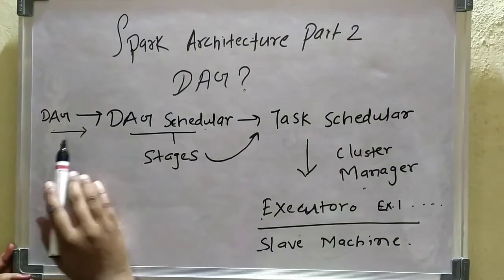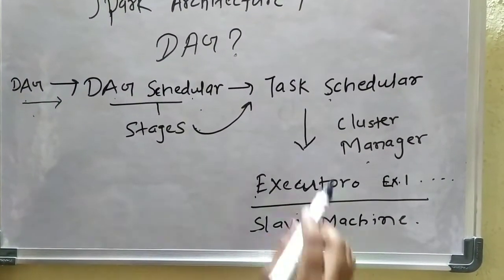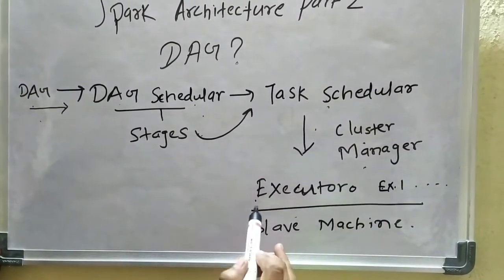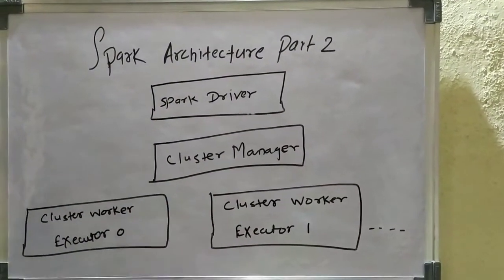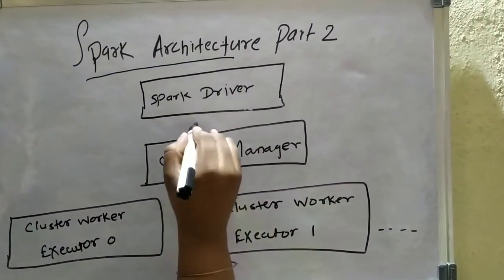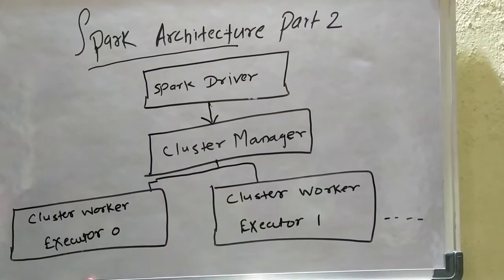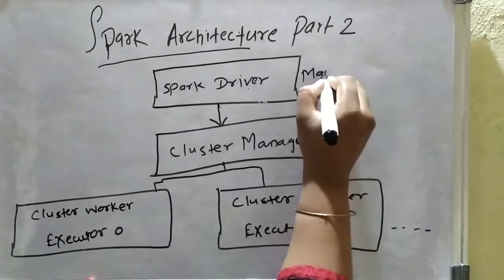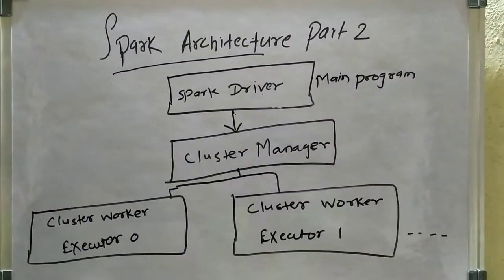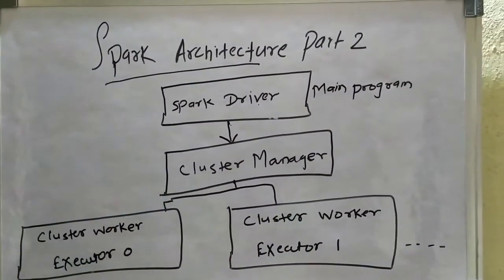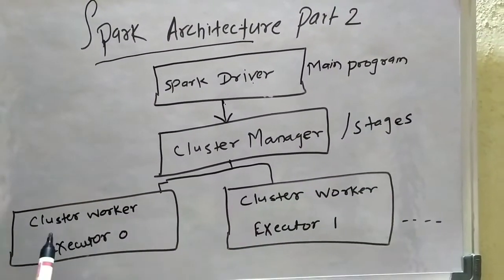This is the whole process of a DAG: it provides input to the DAG scheduler, which divides it into multiple stages, then the task scheduler comes into picture with multiple executors. This is the basic architecture of Spark. As it is a driver-slave program, the Spark driver provides input to the cluster manager, which contains multiple cluster workers. The Spark driver is the main driver program which takes input and provides it to the cluster manager located across multiple machines.